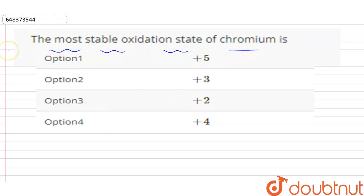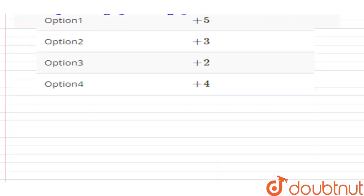So as we know, the common oxidation states shown by chromium are +2, +3, and +6. And among these, the +3 oxidation state is the most stable.